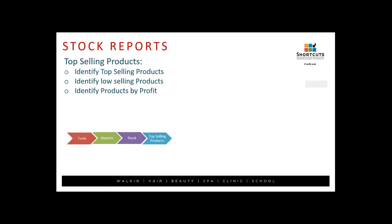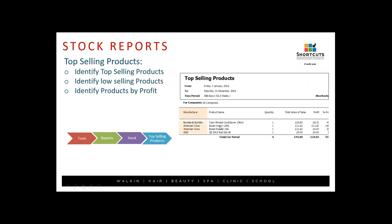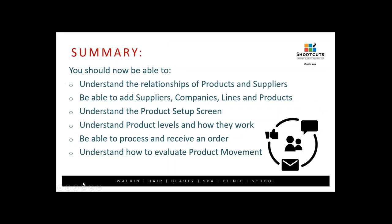This report helps you monitor current stock levels and static stock over time. Another useful report is Top Selling Products, found under Tools, Reports, Stock, Top Selling Products. It shows how many products have been sold over a period, helps identify top-selling and low-selling products, and identifies products by profit — showing which are high in profit and which are low, helping you incentivize staff to focus on the higher-profit products.